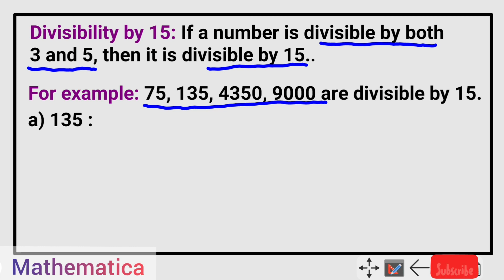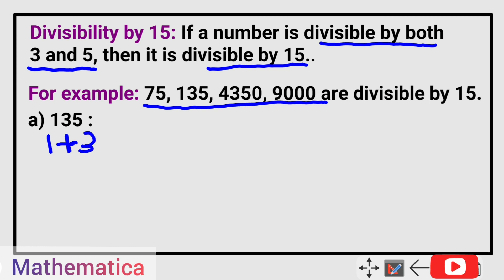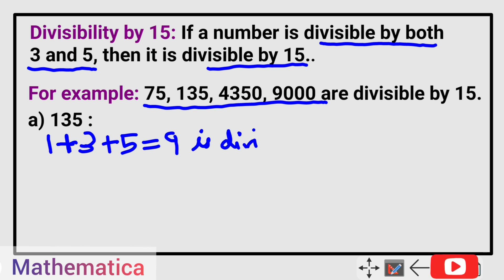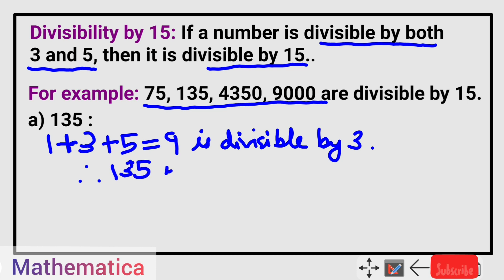So first we apply divisibility by 3. The rule for divisibility by 3 is: if the sum of all the digits is divisible by 3, then the number is divisible by 3. So for 135: 1 plus 3 plus 5 which is equal to 9, and 9 is clearly divisible by 3. Therefore 135 is divisible by 3.